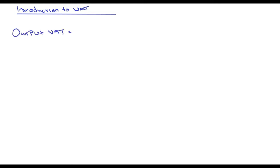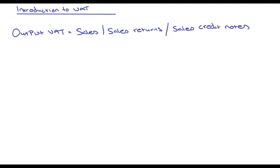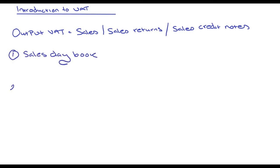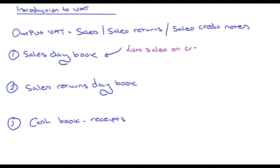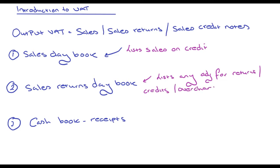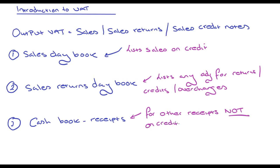Going back to output VAT, this is on the likes of sales, sales returns, and sales credit notes. In terms of the ledger books in a company, you're going to have a sales day book, a sales returns day book, and a cash book receipts book. The sales day book lists all sales made on credit. The sales returns day book lists adjustments for returns, credits, and overcharges. The cash book receipts is for other receipts that are not on credit.